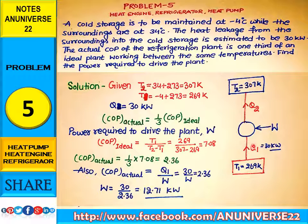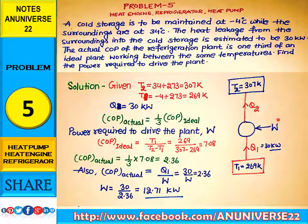Q1 is the amount of heat extracted from the cold storage at temperature T1, which leaks into the surroundings. Q1 is 30 kW, and W is the work done. Another condition given is that COP actual equals one third of COP ideal. The power required to drive the plant, W, is to be calculated in kW.